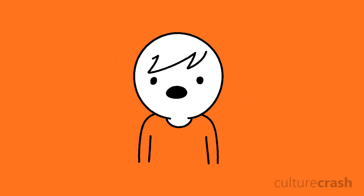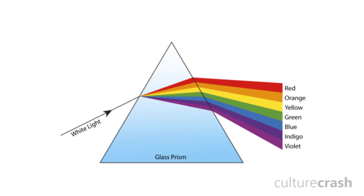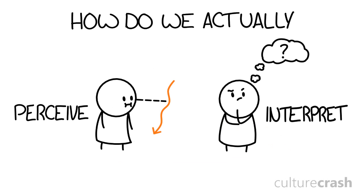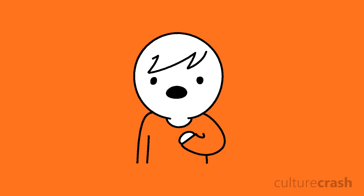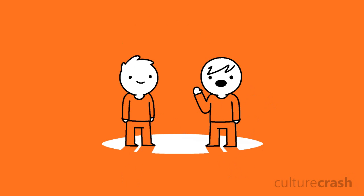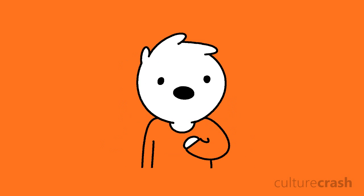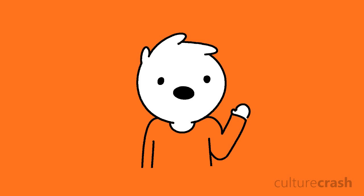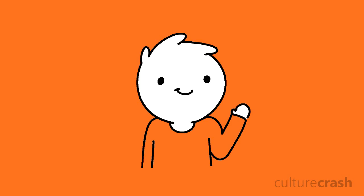So now we know what light is, but how do we actually perceive and interpret colour? This video is going to go way too long — let's finish this off another time! Next time we'll cover some of the more biological and chemical aspects of sight, detailing the eye and the neural pathways involved in sight. See you guys next time! Follow Culture Crash on social media!